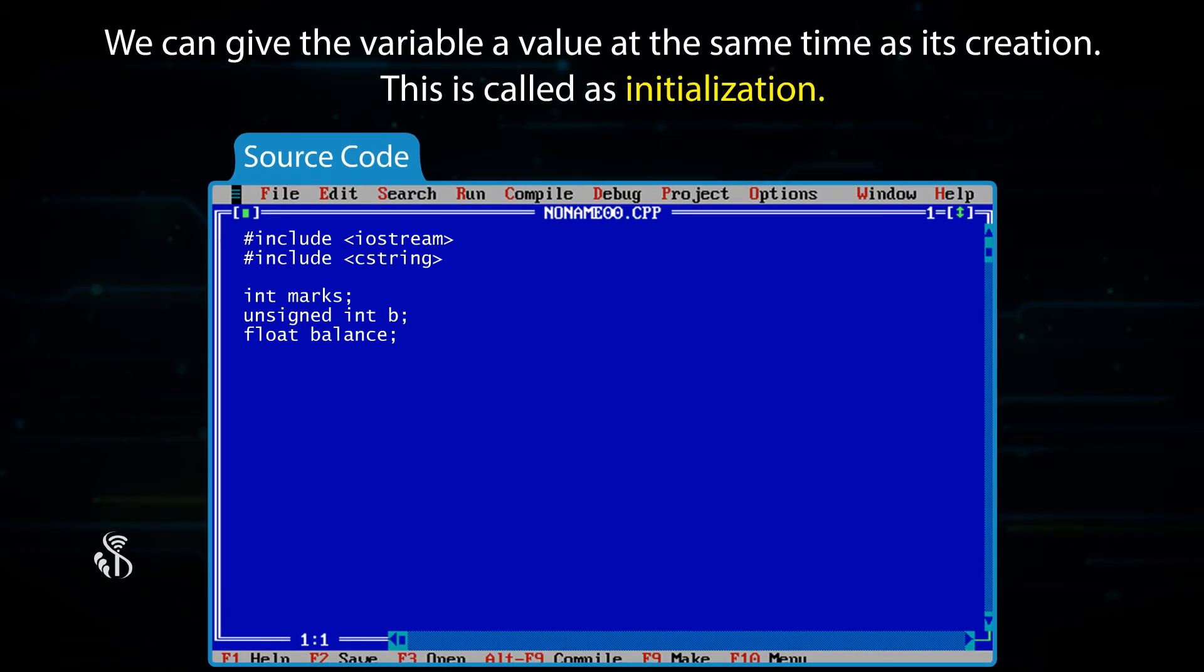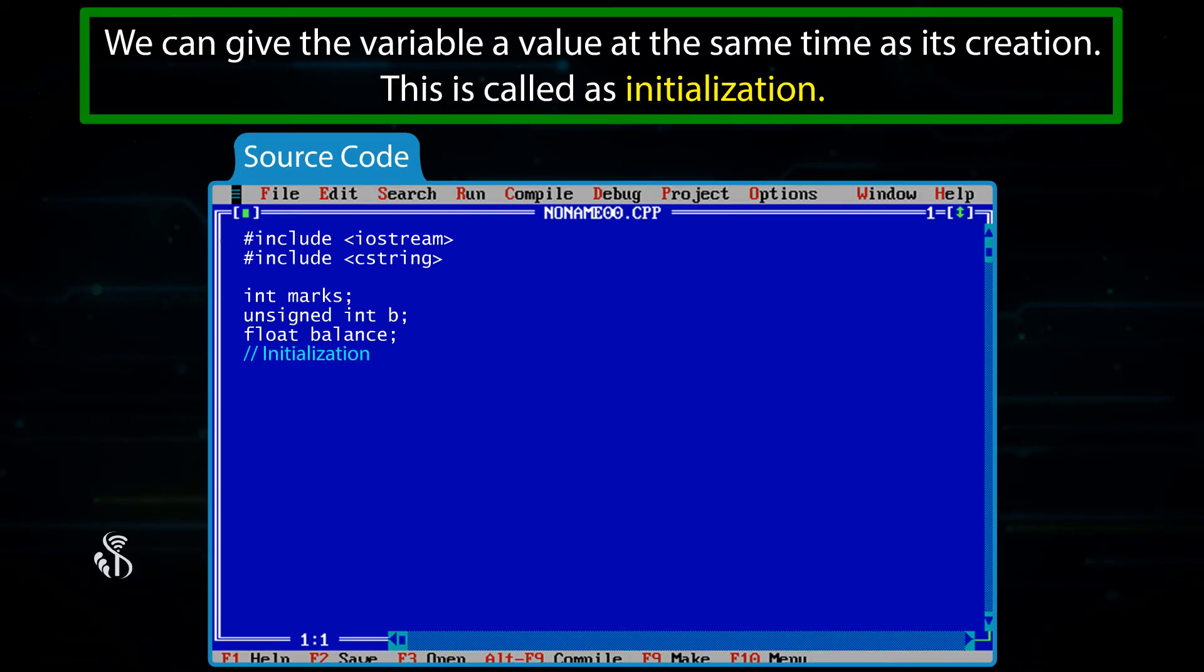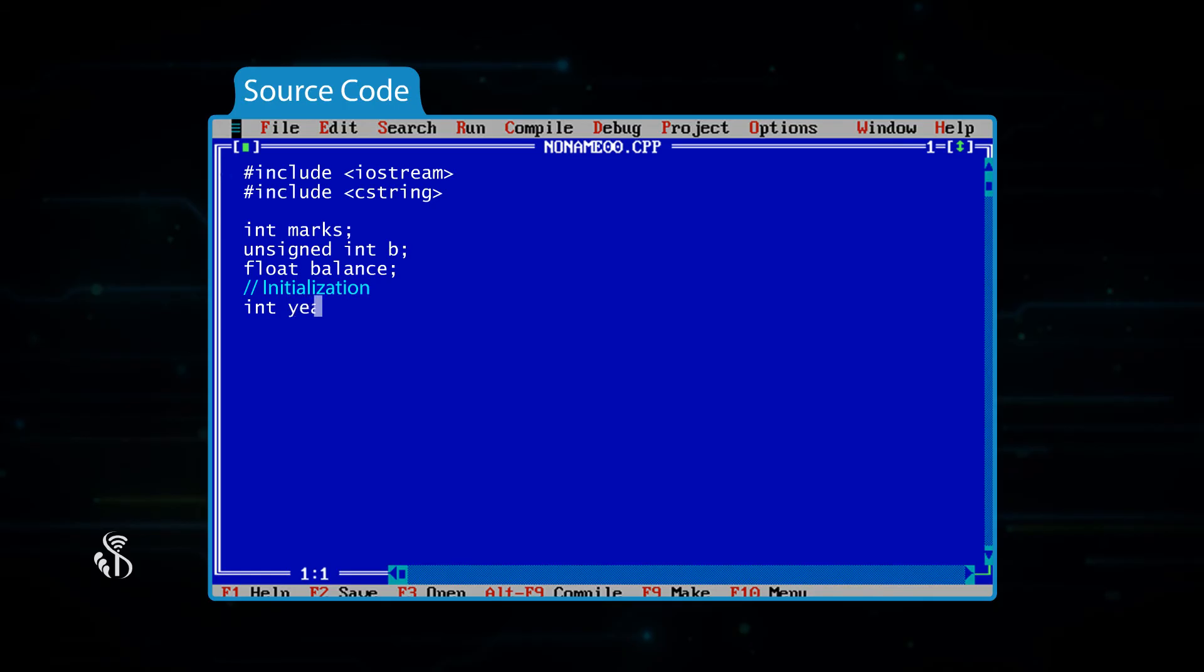We can give the variables a value at the same time as its creation. This is called initialization. For example, integer year is equal to 2018, semicolon.